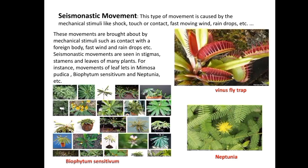Sismonastic movement is caused by mechanical stimuli like shock, touch, contact, fast-moving wind, or raindrops. It is seen in stigmas, stamens, and leaves of plants like Mimosa pudica, Biophytum, and Nepenthes. The best example is the leaves of the sensitive plant — the touch-me-not plant. Thigmonasty and sismonasty are similar but differ in examples: the best example for thigmonasty is Mimosa pudica specifically.